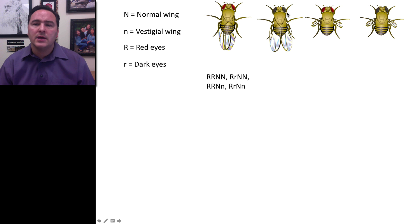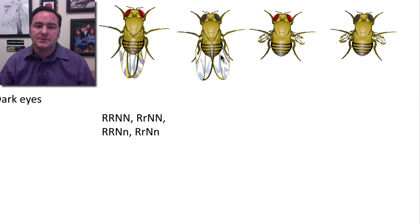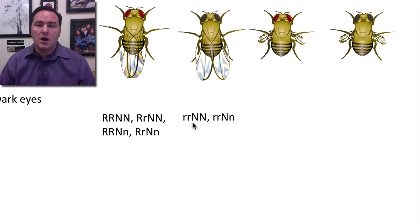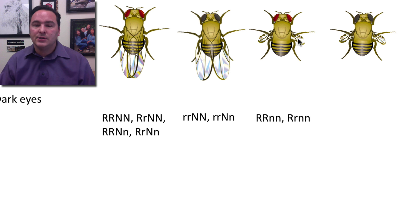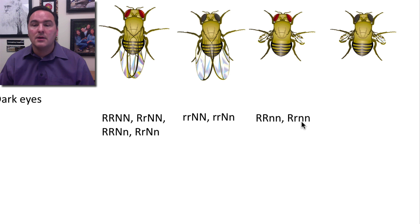Let's do the same for the dark-eyed winged fruit fly. The possible genotypes are: little r little r, big N big N; and little r little r, big N little n. For the red-eyed vestigial, the possible genotypes are: big R big R, little n little n; and big R little r, little n little n.